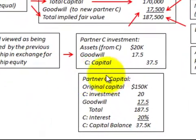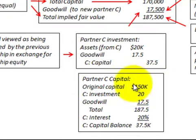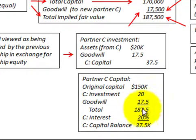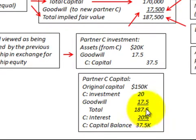Looking at partner C's capital account, we calculate it by taking the original capital amount of $150,000 for the original partnership, plus the investment that C made of $20,000, plus the goodwill allocated of $17,500, giving a total of $187,500. That was also the total implied fair value of the partnership. Partner C is receiving a 20% interest, so 20% of $187,500 gives them a capital balance of $37,500.